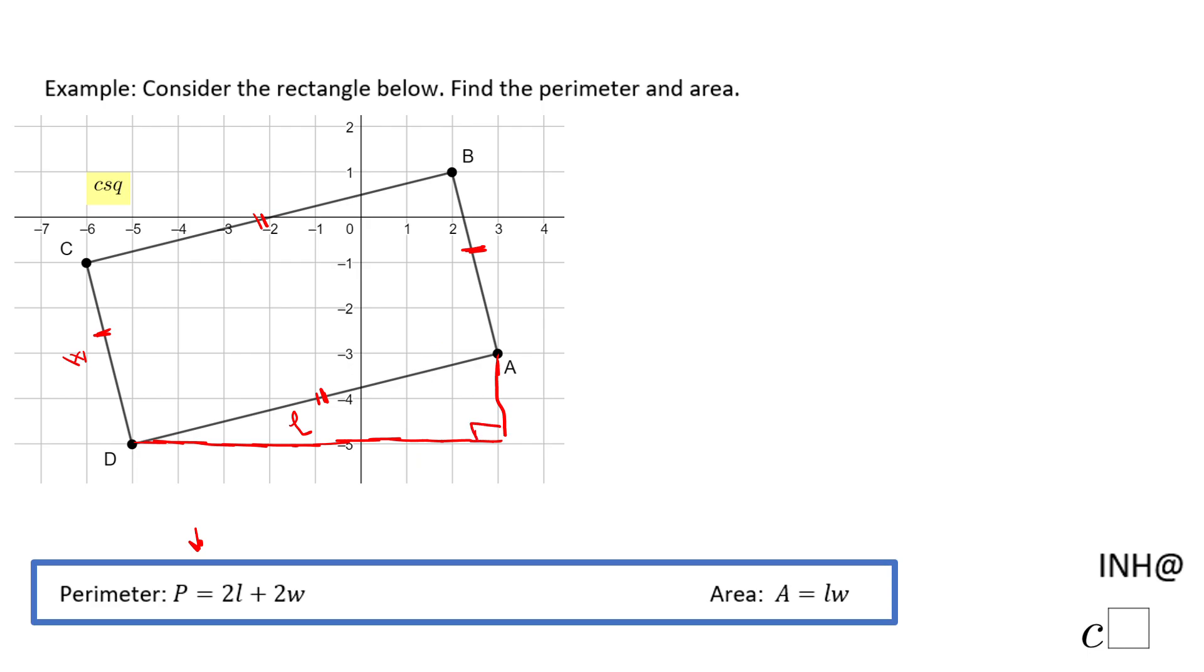We're going to use the Pythagorean theorem. First, I'm going to count: one, two, three, four, five, six, seven, eight. The length of this leg of the red triangle is eight, and this one is two.